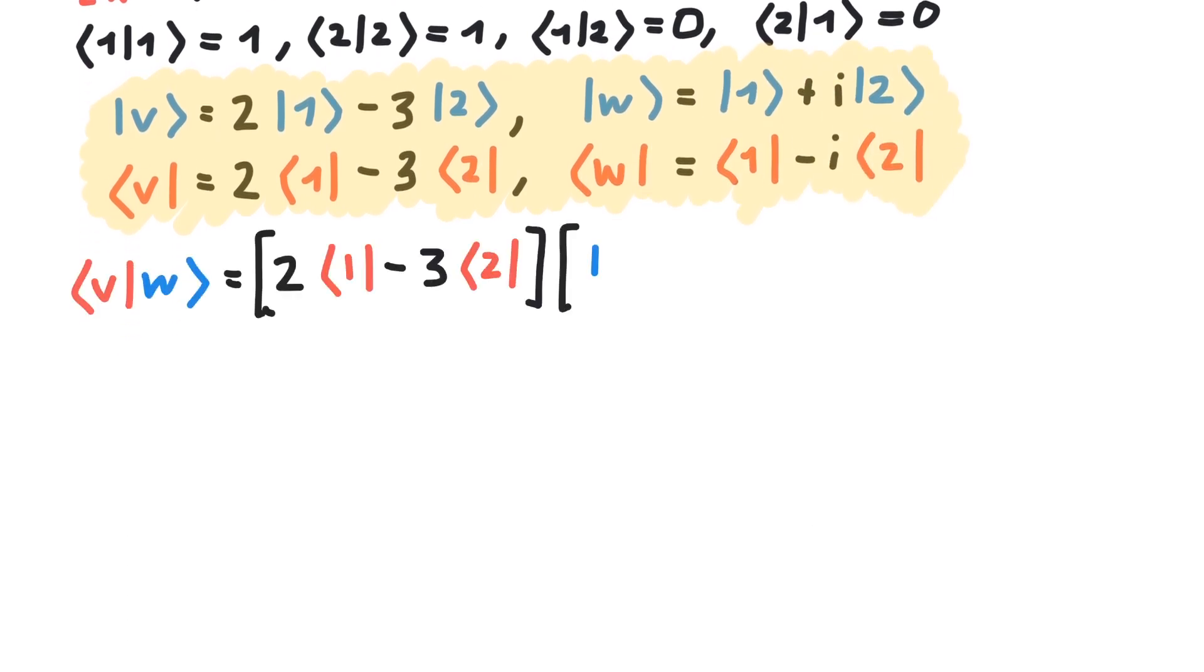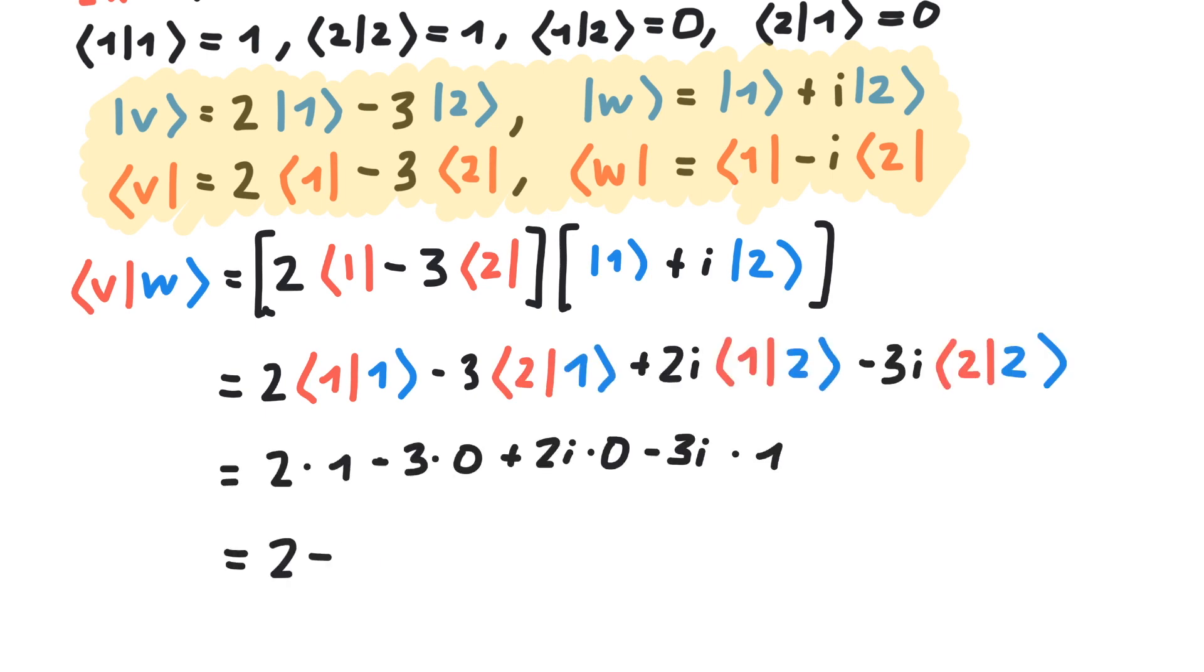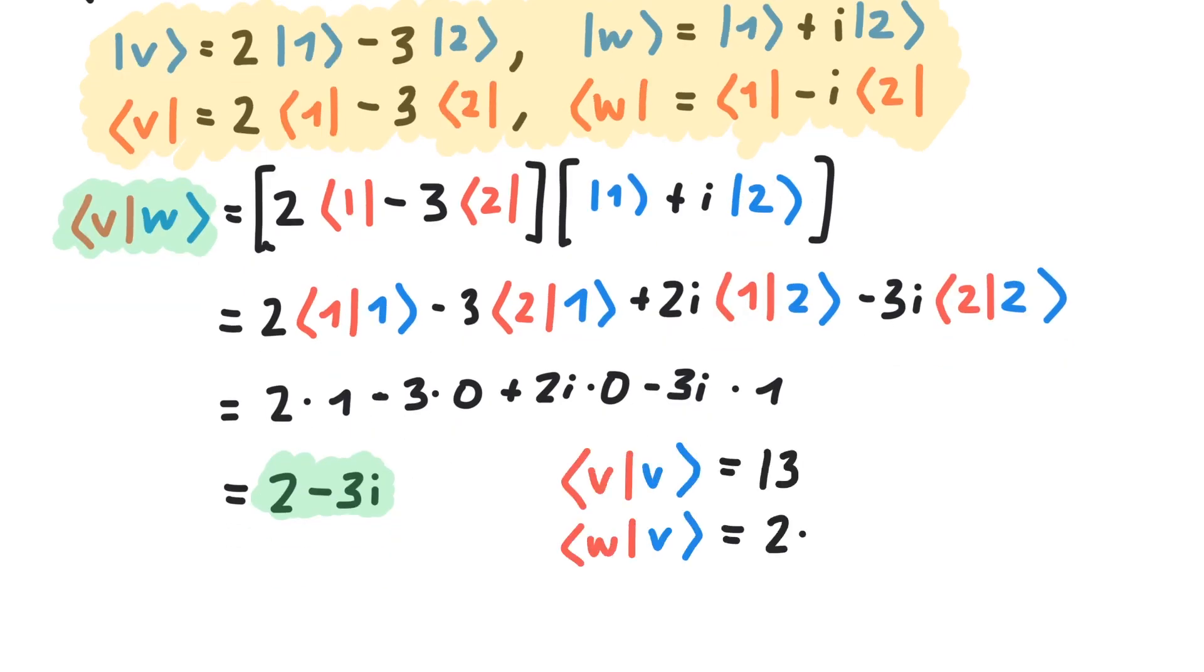Multiplying the bra v onto the ket w gives 2 minus 3i. Here are the results for the other possible combinations of products.